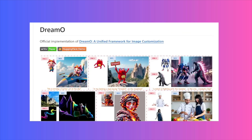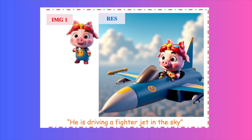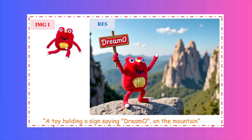Next up, we have an AI that solves one of the biggest frustrations with image generators — getting an AI to create a picture with your specific character or object. This tool, called Dreamo, is built to do exactly that, and the results are incredibly accurate. For example, you can give it an image of a pig character, type in the prompt 'he is driving a fighter jet in the sky,' and get that exact character in a completely new, wild scenario. Or take a plushie toy — prompt it with 'a toy holding a sign saying Dreamo on the mountain,' and it looks exactly like the original toy.